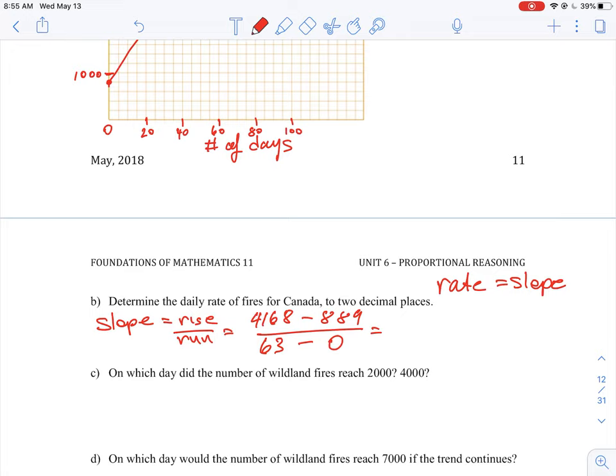And we work this out, because we got the numbers here, we can do this exact, which is going to be 3279 divided by 63, which is approximately 52 fires per day. That tells us how many fires were started each day as it kept going.